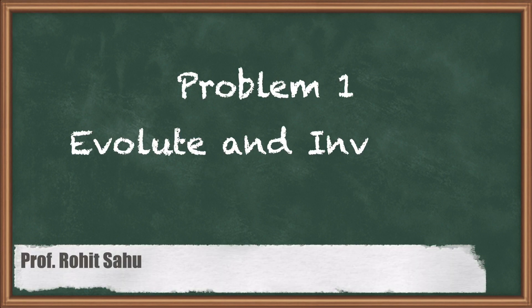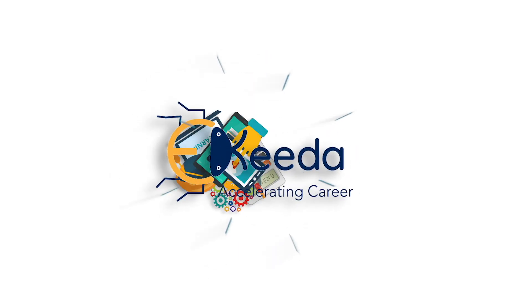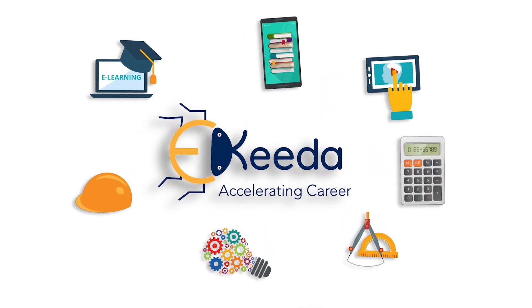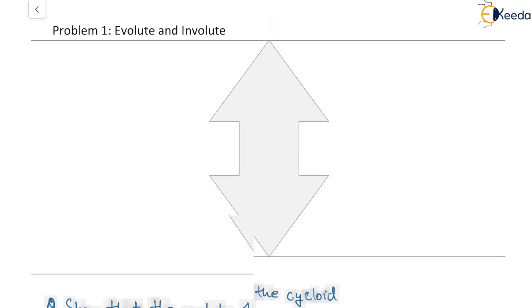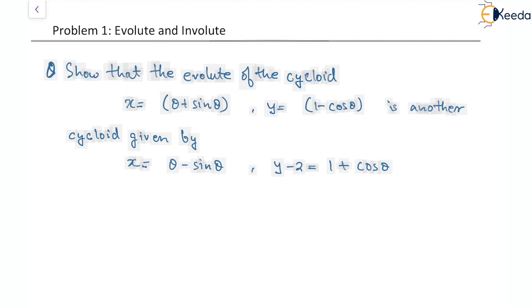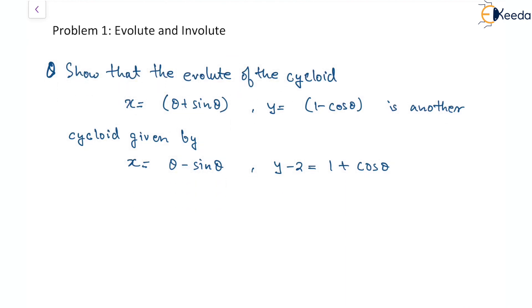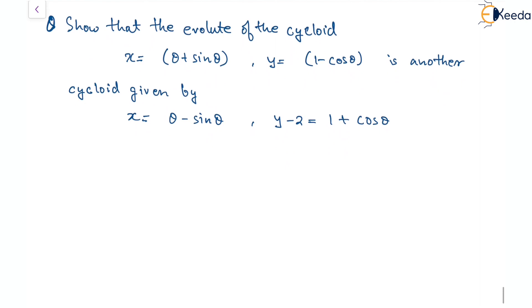Hello friends. In this session we'll see the first question on evolute and involute. The question is given where we have been provided with a cycloid: x equal to theta plus sin theta, and y equal to 1 minus cos theta. We have to check that the evolute of this cycloid is also another cycloid given by the stated expression.